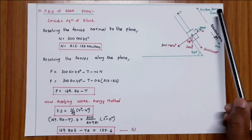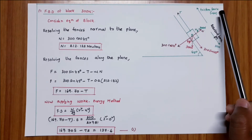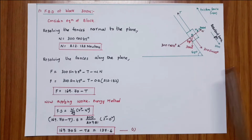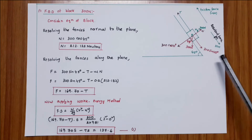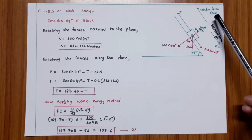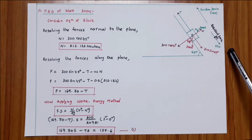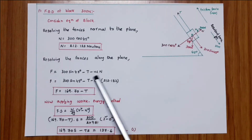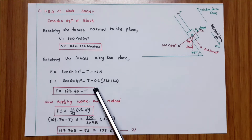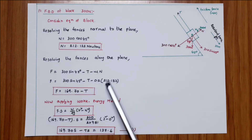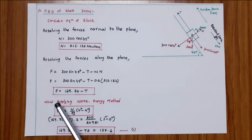Resolving forces along the plane for block B: the forces are 300 sin 45, tension T, and friction force mu×N. The resultant force acts in the direction of motion (downward along plane), so 300 sin 45 is positive, while T and mu×N are negative. Therefore, F equals 300 sin 45 minus T minus mu×N equals 300 sin 45 minus T minus 0.2 × 212.132. This gives F equals 169.70 minus T.